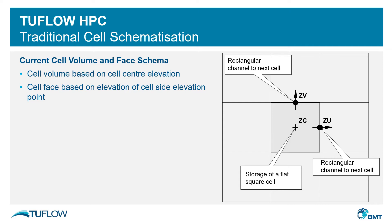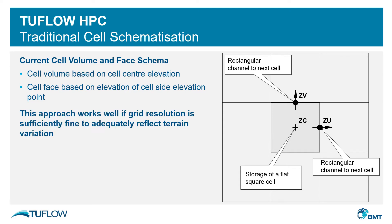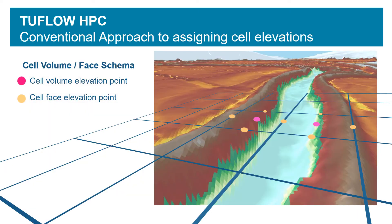Not all 2D solvers do this. The elevations of the cell center points and the cell side points are sampled from the underlying DTM or TIN, and this provides a flat-bottom cell from which the cell volume is based, and rectangular faces to adjacent cells on which velocity and flow is based. This approach works well if the model cell size sufficiently represents the underlying topographic variation. This slide shows the traditional cell schematization with a cell volume elevation point at the center and four cell face elevation points on each face, providing the flat-bottom cell and rectangular faces into adjacent cells.